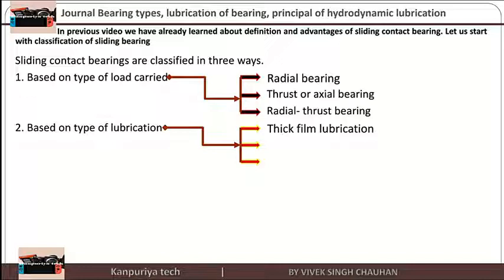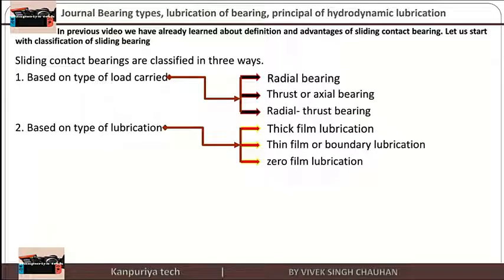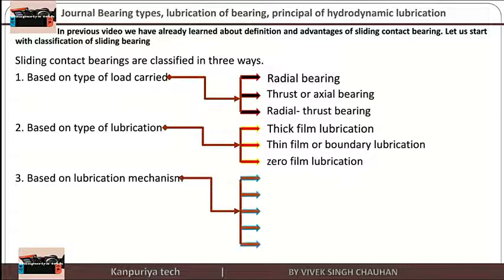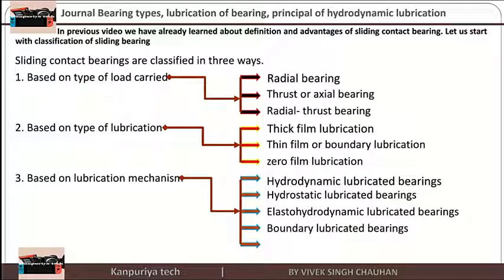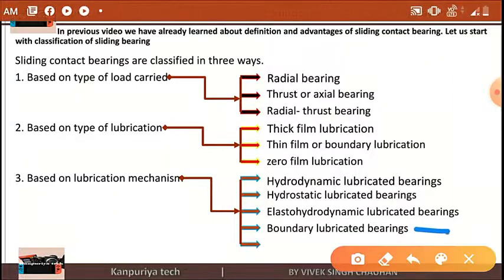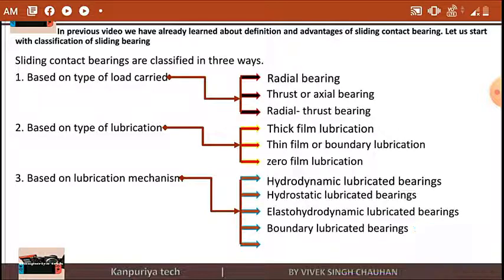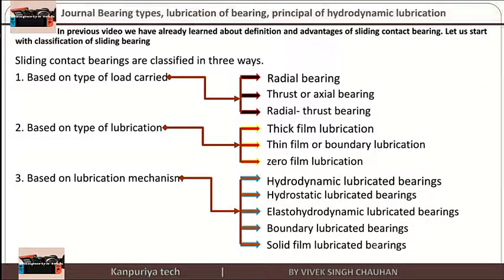The second type of classification is based on the type of lubrication. There are three types: the first is thick film lubrication, the second is thin film or boundary lubrication, and the third is zero film lubrication. The third classification is based on lubrication mechanism, which is defined by five types: hydrodynamic, hydrostatic, elasto-hydrodynamic, boundary lubricated, and solid film lubrication.